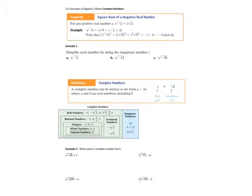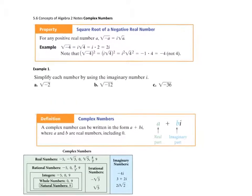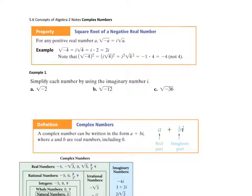So far in math, we've always talked about real numbers, the real number line. Real numbers consist of irrational numbers or rational numbers.